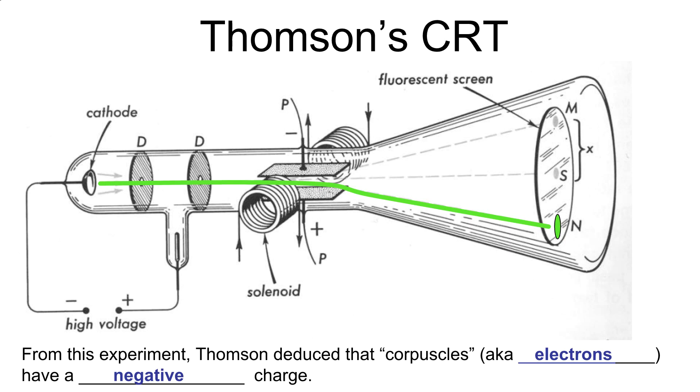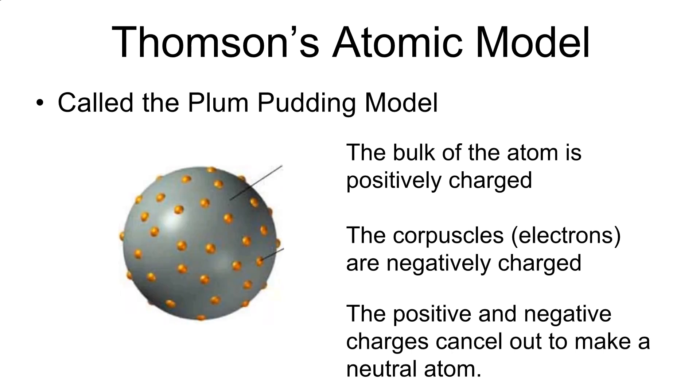So this is what Thompson came up with. He said, 'I think the atom is made of mostly positive material, and scattered throughout the inside and outside are these negatively charged particles'—at the time, he called them corpuscles. He said that these negatives and positives would cancel one another out to make that atom overall neutrally charged. Now we know today we don't call them corpuscles—these are called electrons. Thompson discovered the first subatomic particle: the electron.